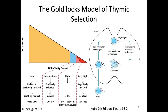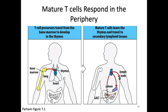Once the T cell has gone through this process, it leaves the thymus and goes to the periphery. This is an important transition in the course — we're moving from development into how we actually deal with pathogens in the periphery. We're entering the 'immune response in space and time' section. We've finished developing our cells; now we're going to have them do something in the periphery. We will come back to B cells later.